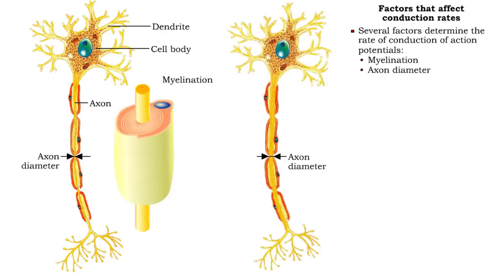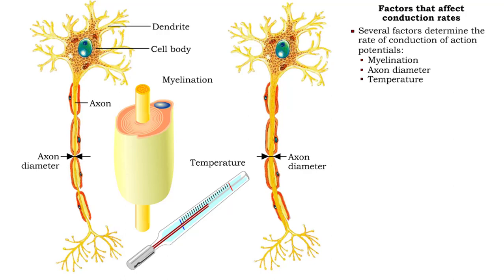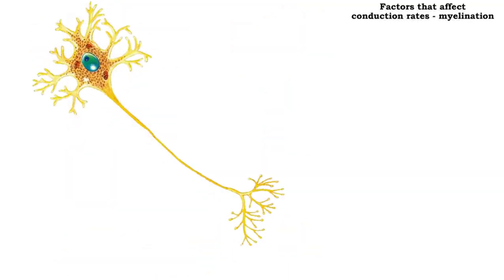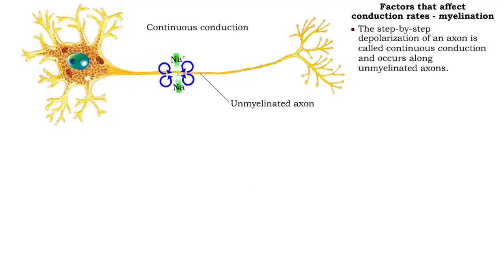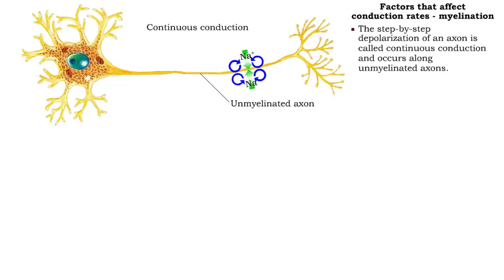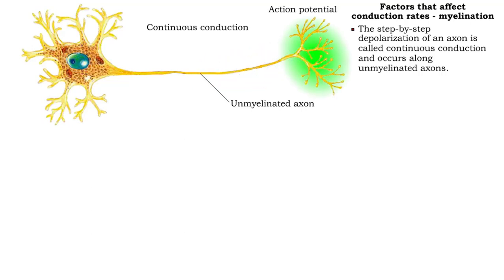Myelination, axon diameter, and temperature all have an effect on the conduction rate of an electrical impulse. Propagation of action potentials along axons of neurons that are not covered by a myelin sheath requires that all of the membrane must undergo depolarization. This kind of conduction occurs along unmyelinated axons and is called continuous conduction.